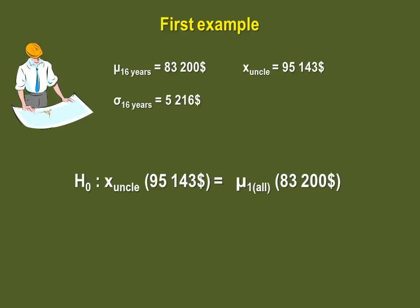The question was, is your uncle's salary significantly higher? Because we have a clue of direction, this is not a two-tailed test. Since we are asking about a higher salary, the test is a right-tailed test.